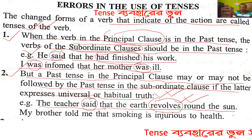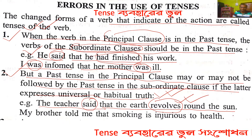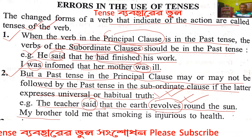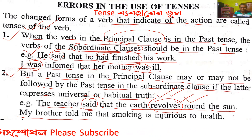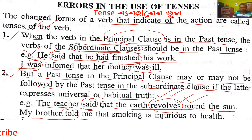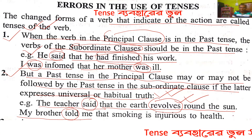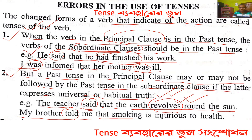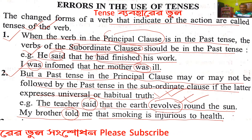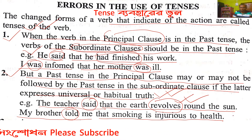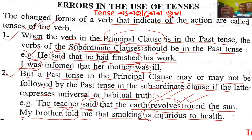'My mother told me that smoking is injurious to health.' Here 'told' is past tense in the principal clause, but the subordinate clause uses present tense — 'is' — because smoking being injurious to health is a habitual or universal fact.